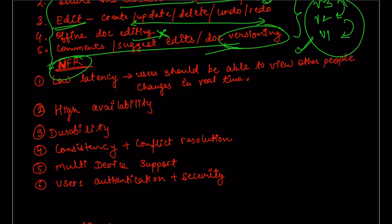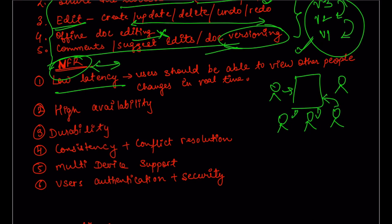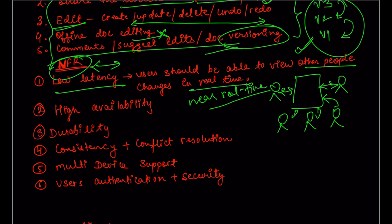For non-functional requirements (NFR) — if you don't know how to come up with these, there is a video in my system design playlist. The first NFR is definitely low latency: multiple people working together on a single document, and if they are doing edits, other users should be able to see those edits in near real time — milliseconds or less than a second. We are seeking that kind of latency, operating in near real time, not strictly real time.